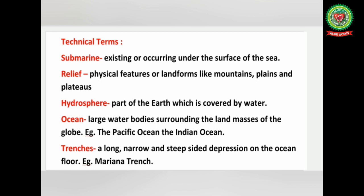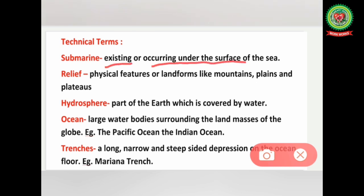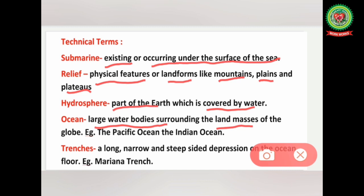The main purpose to measure ocean surface topography is to understand the large-scale circulation of the ocean. The first key term is submarine — existing or occurring under the surface of the sea. Relief refers to physical features or landforms like mountains, plains, and plateaus. Hydrosphere is the part of the earth covered by water. Trenches are long, narrow, steep-sided depressions on the ocean floor.